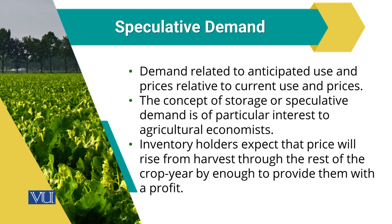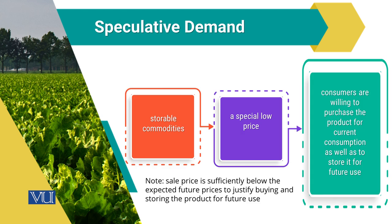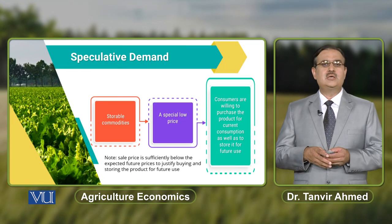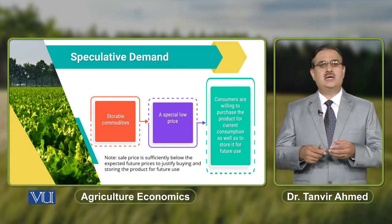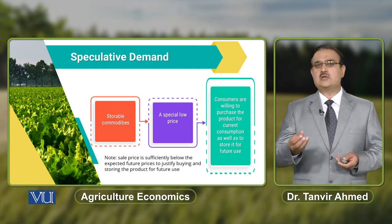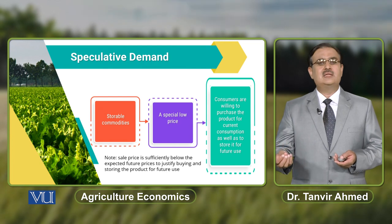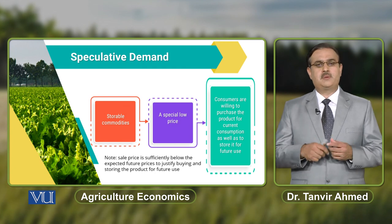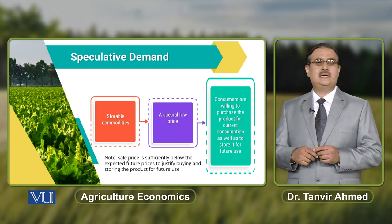The motive behind speculative demand is profit. From a consumer perspective, there is speculative demand when a consumer is in a departmental store and there is a special promotion on a particular commodity — a price reduction. The store announces that the price of a particular commodity is 20% less than its normal price, and that commodity is also a storable commodity.